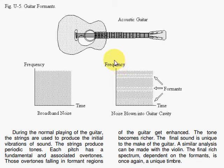What makes a Stradivarius violin a Stradivarius is that certain formant regions exist there, so that when you play the violin, these formant regions are in desirable places to enhance certain harmonics and give the most pleasant sound for a violin.